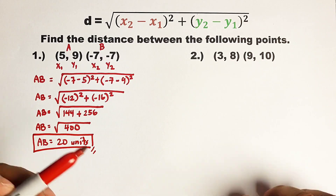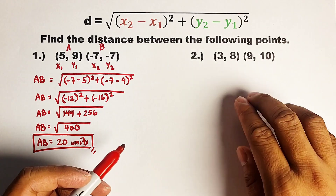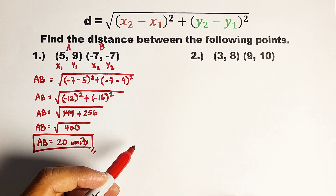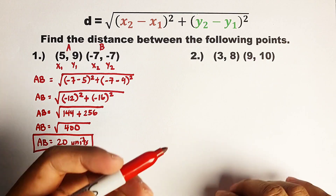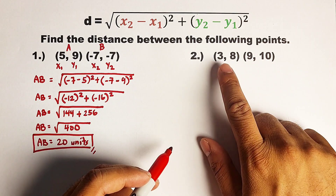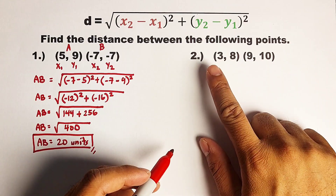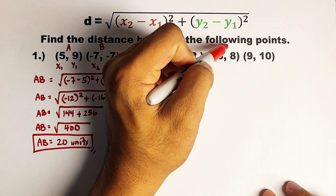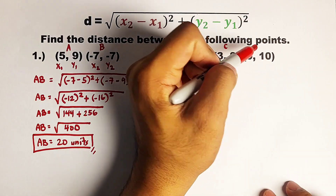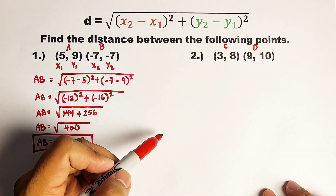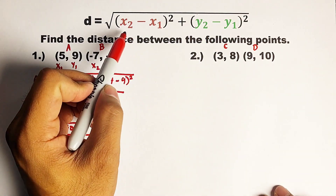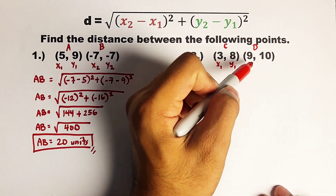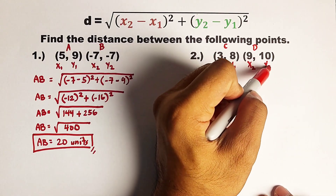Okay, guys? You can pause the video for a while if you want to answer this question. Let's continue. Here we have the first point, which is 3 comma 8, and the second point is 9 comma 10. Let's say this is point C and this is point D. Before using this formula, remember, we will put the labels: x sub 1, y sub 1, x sub 2, y sub 2.